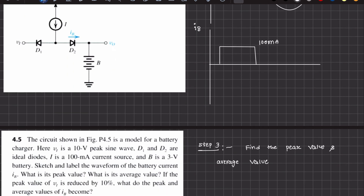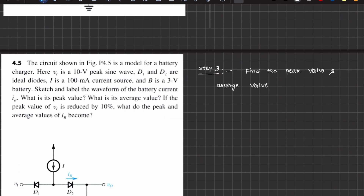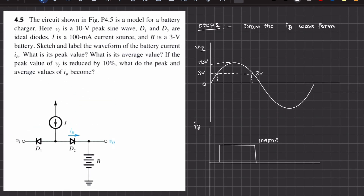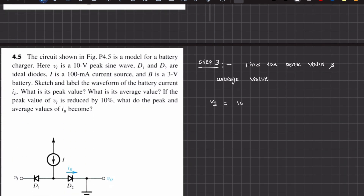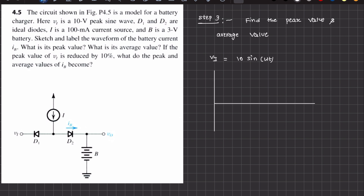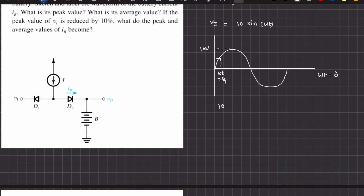We have already calculated the peak value, and now we need to calculate the average value — this is the tricky part. The diode is conducting between two time intervals, which in angular terms are theta1 and theta2. The input voltage is given as VI = 10 sin(ωt). In step 3, we plot the input voltage, which is a sinusoidal wave of 10 volts, and we take ωt as theta to find the conduction angles.